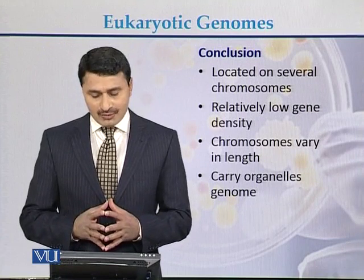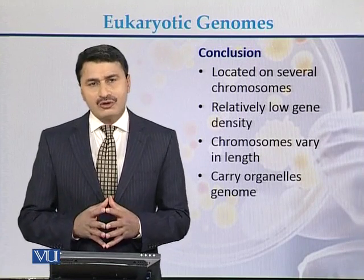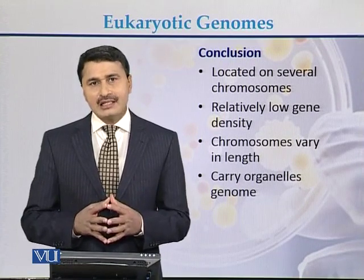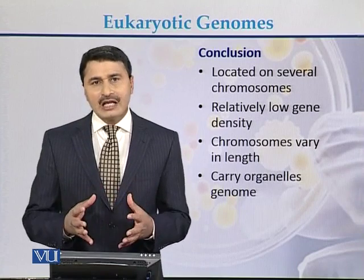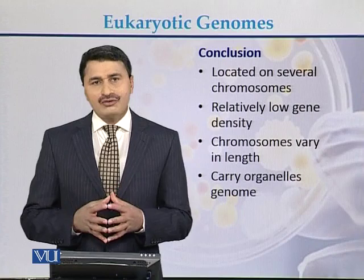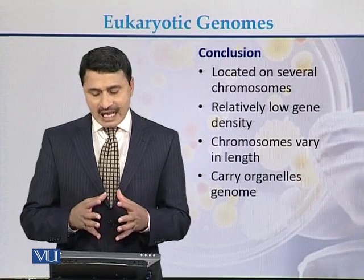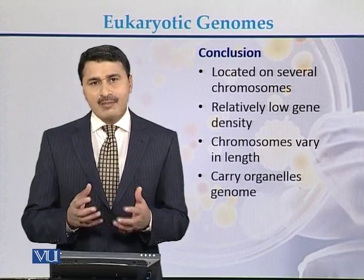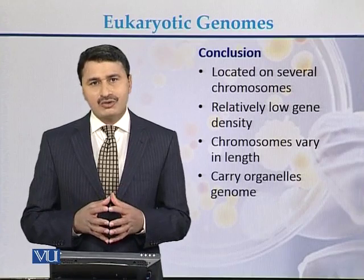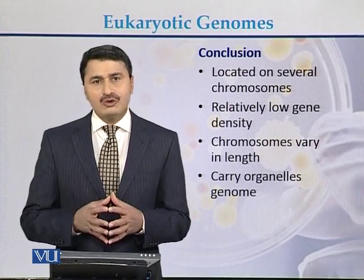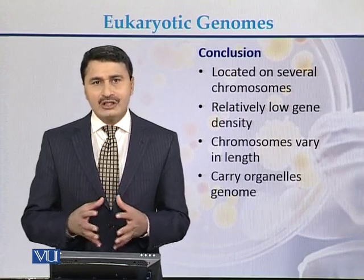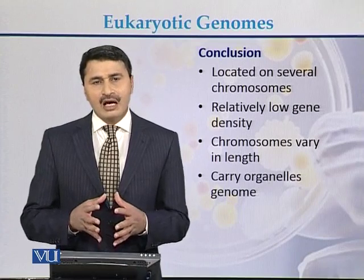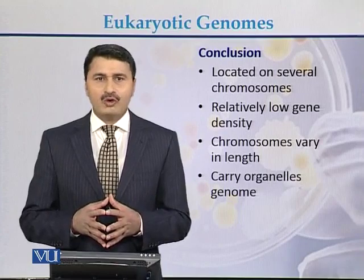To conclude: in eukaryotes, the genome is located in the form of chromosomes within the nucleus. There is low gene density and chromosomes vary in size — some are large and some are small. In addition to the nuclear genome, there are also organelle genomes in the form of mitochondria or chloroplasts.